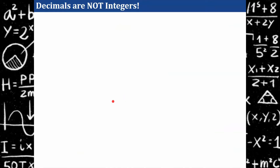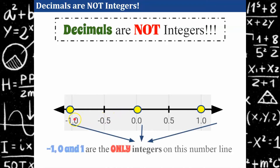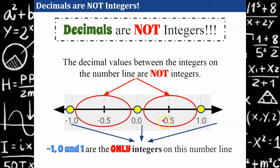Also, decimals are not integers. The only integers on this number line are negative one, zero, and one. I noted negative one point zero on purpose — because this value can be written without a decimal point zero, it's still an integer. It could be written as just negative one. Zero point zero could be written as just zero, and one point zero is still an integer. However, negative zero point five and positive zero point five are parts of a whole — you could read this as zero point five or five tenths, which is equivalent to one-half. These are parts of wholes and not integers.